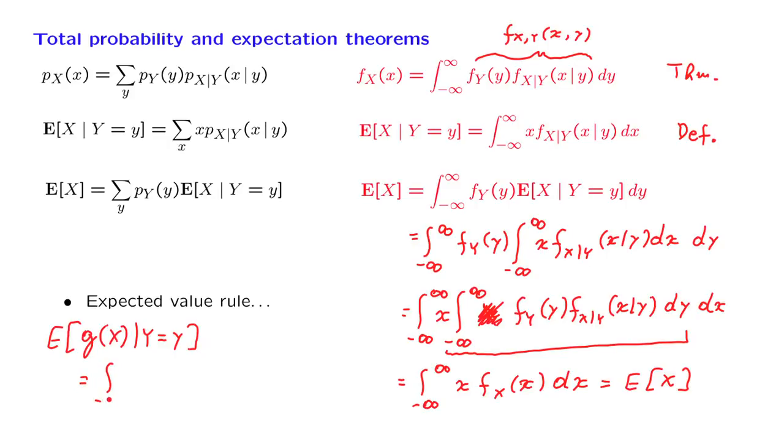Well, the expected value rule tells us that we should integrate g of x times the density of x. But because here we live in a conditional universe, we should actually use the corresponding conditional PDF of x.